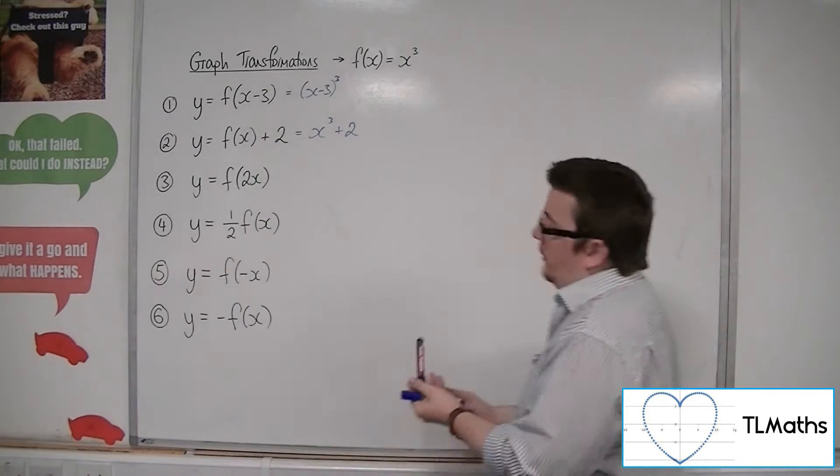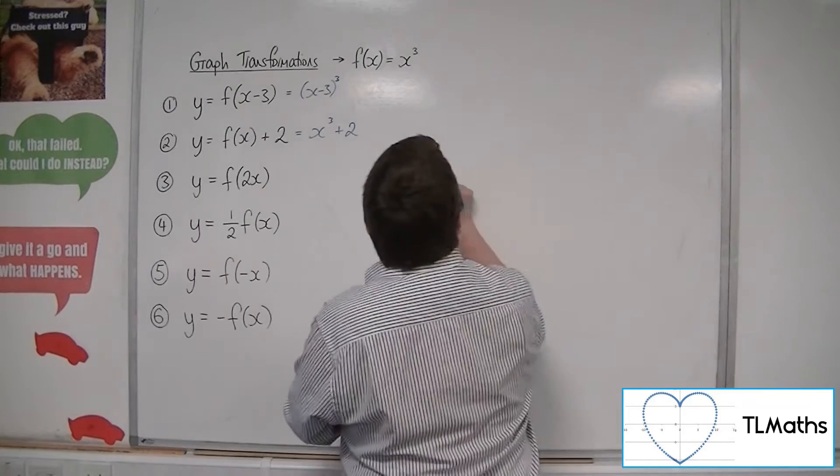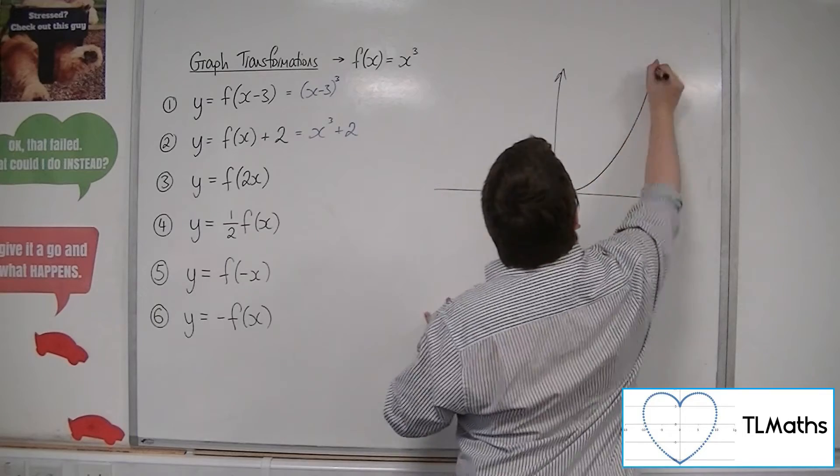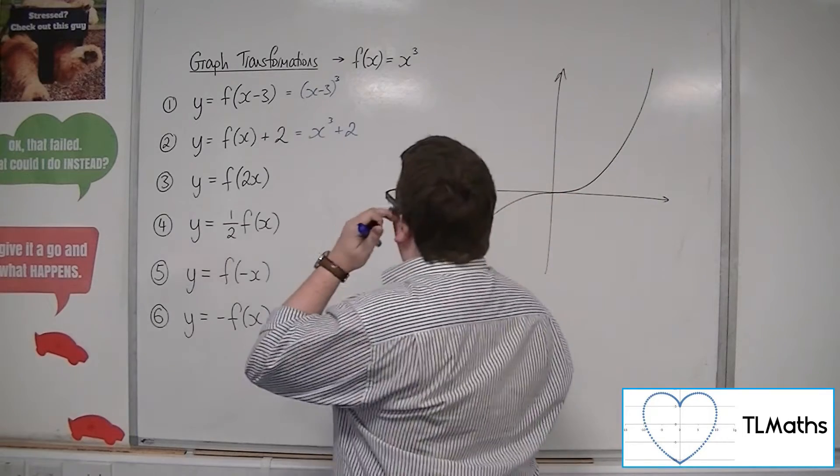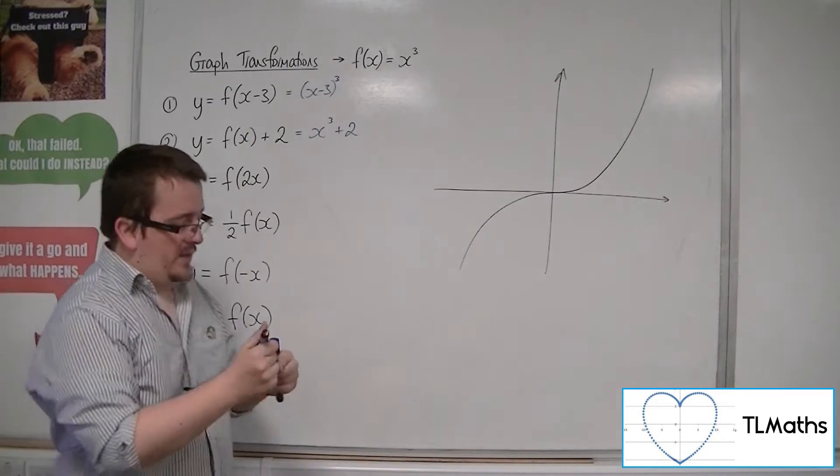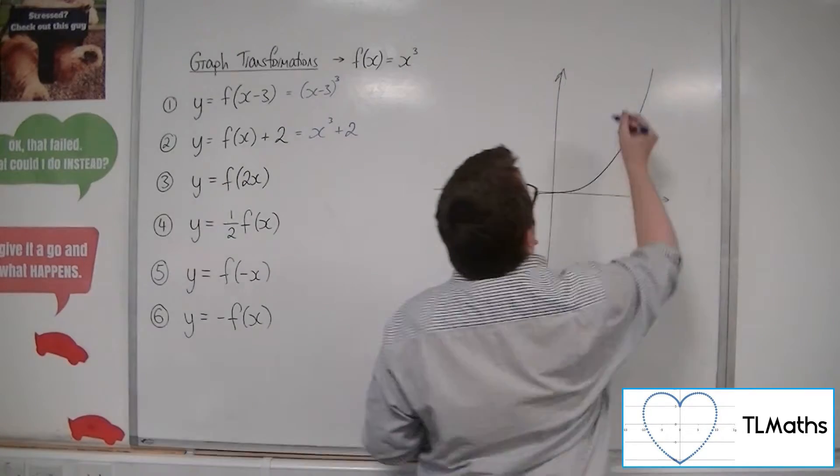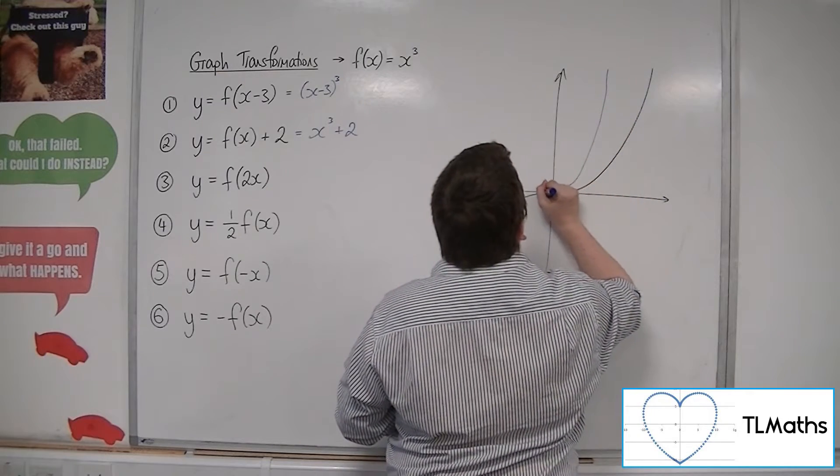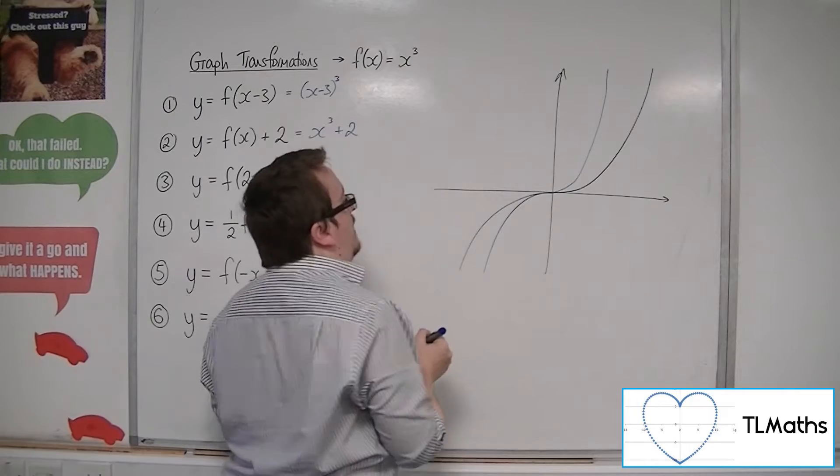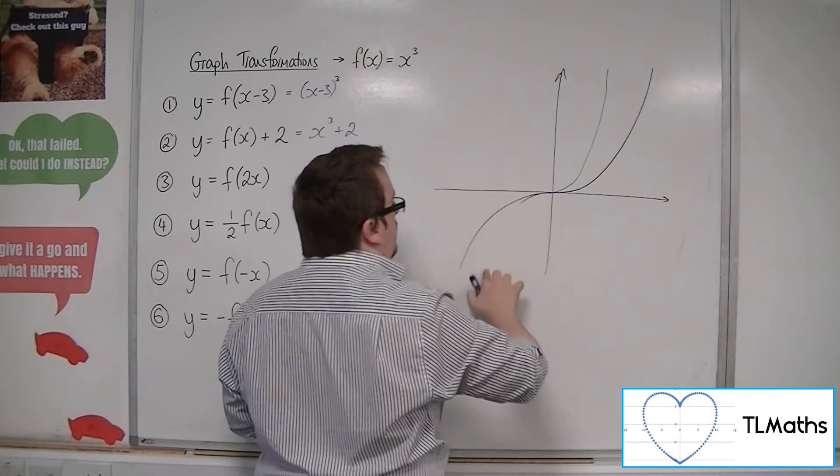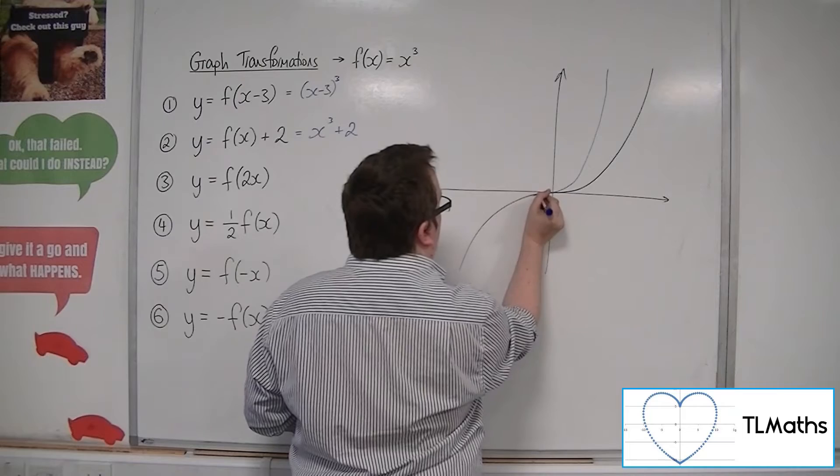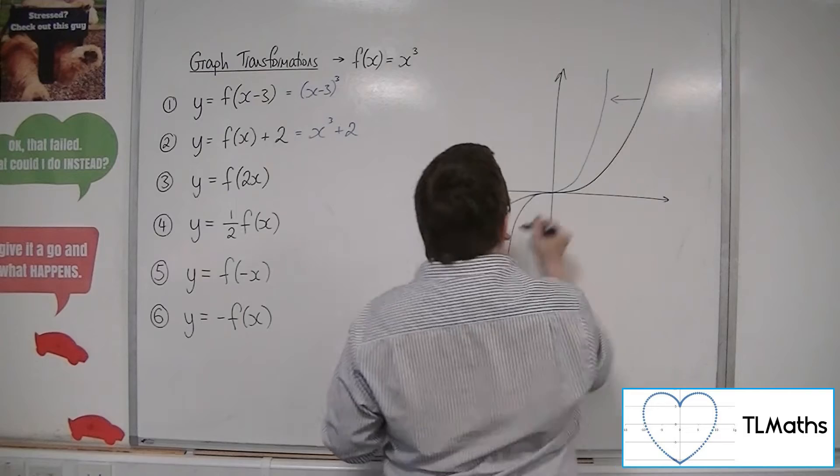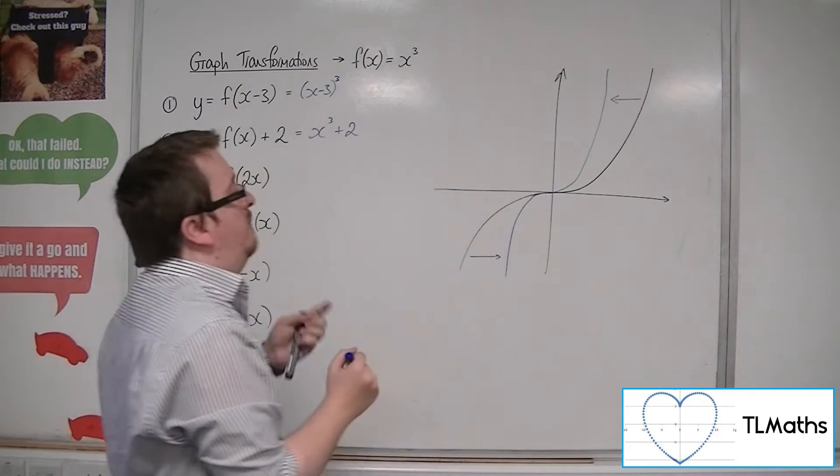Now, f of 2x. So here is x cubed. Then we've got f of 2x is a stretch parallel to the x-axis factor of half. So we stretch the curve inwards. Something like that, by factor of a half. So it would probably be even more pronounced down this side. It would be kind of halfway. So each of those x coordinates for the original curve have been halved.